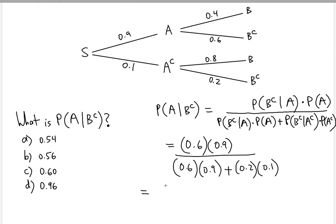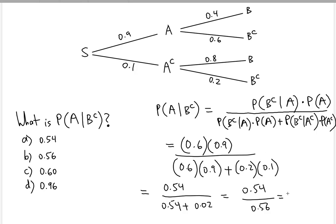So you get 0.54 divided by 0.54 plus 0.02, which is essentially 0.54 divided by 0.56. You can already tell this is going to be really close to 1. The precise answer is 0.964285714, which rounds to about 0.96. So this would be the correct answer.